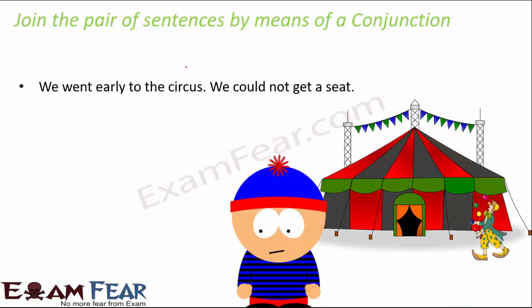'We went early to the circus. We could not get a seat.' The first sentence has a positive meaning — we went early — but the second is negative — we could not get a seat. These are contradictory. We expect that going early means getting a seat, but in this case we did not. So we join them with 'but': 'We went early to the circus, but we could not get a seat.' If we had gotten a seat, we would have used 'and' instead.